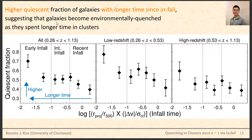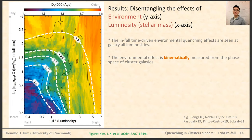This suggests that galaxies become environmentally quenched as they spend longer time in cluster environments. This figure also shows that galaxies experience quenching regardless of galaxy luminosity, i.e., stellar mass. The x-axis is galaxy luminosity, the y-axis is galaxy infall time, and the color indicates the mean 4000 Å strength at a particular grid of luminosity and infall time. At a given luminosity, galaxies become older as they spend longer time in cluster environments, confirming that environmental quenching is independent of stellar mass.